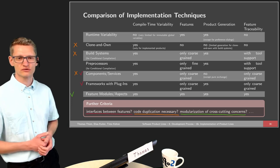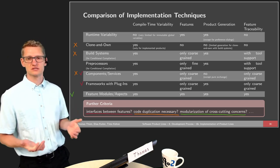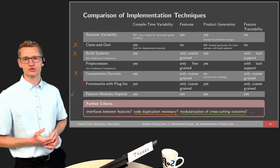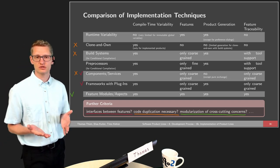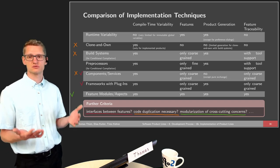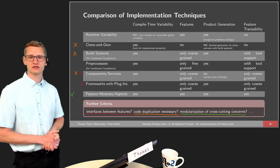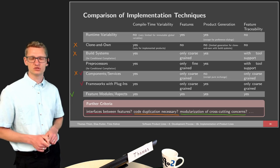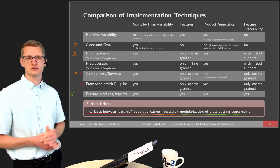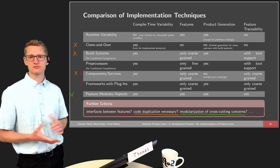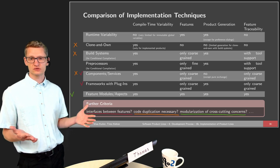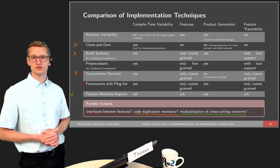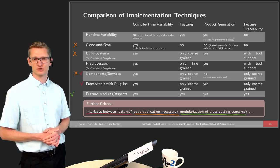When it comes to modularization of cross-cutting concerns, the picture is much easier because this is only feasible with feature modules and aspects. This shows those techniques are interesting for modularization of cross-cutting concerns because everything is located together in terms of a feature, independent of granularity — not only coarse-grained but also fine-grained features can be modularized. This also shows why frameworks with plugins are used very frequently and successfully in practice.